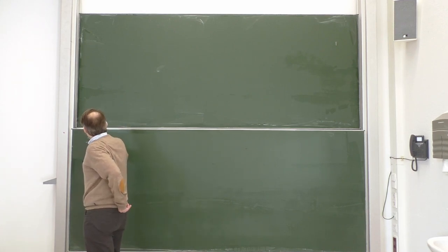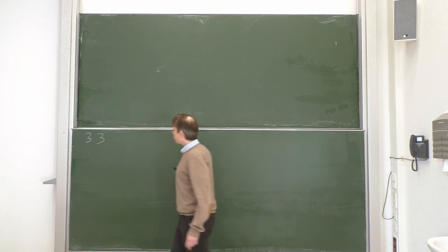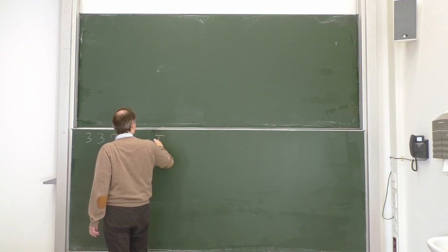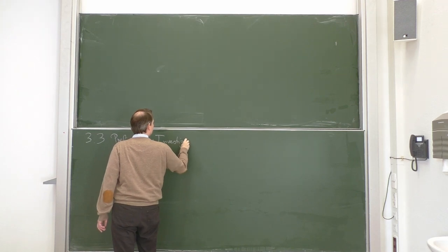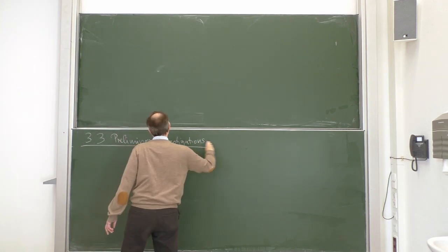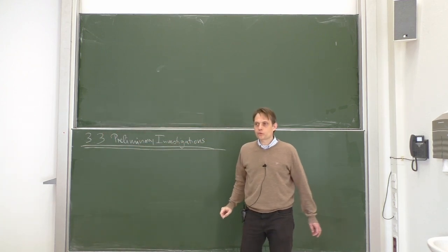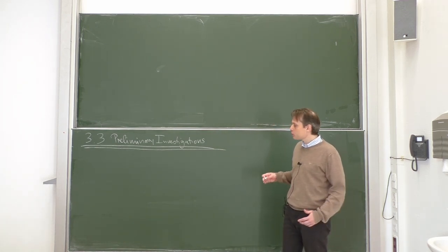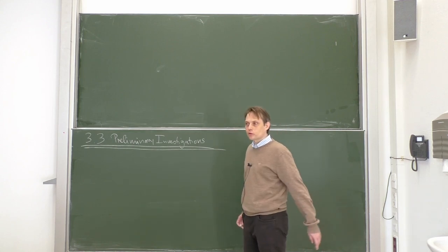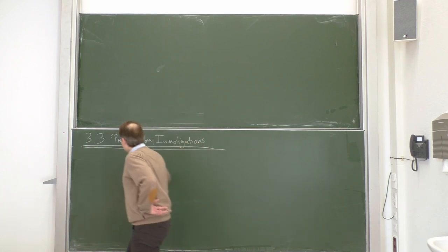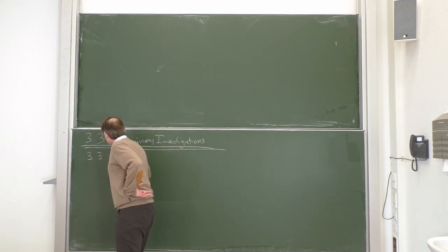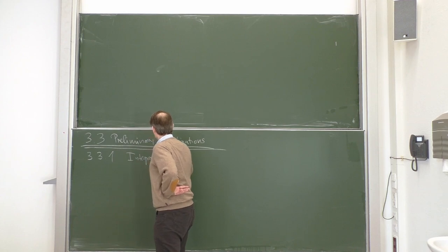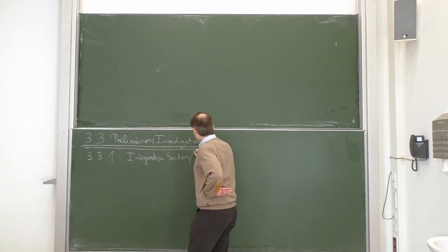Now back to section three on convergence theorems, and let us do some preliminary investigations. In this section I want to do a lot of warm-up exercises which give us intuition, methods, and example knowledge that we can use later for more general proofs. The first topic is on integration sectors for labeled forests.